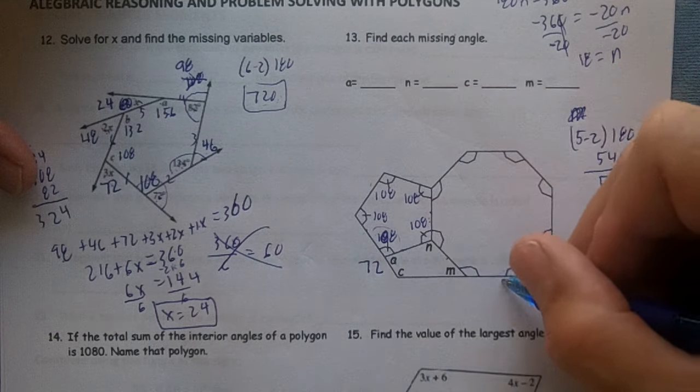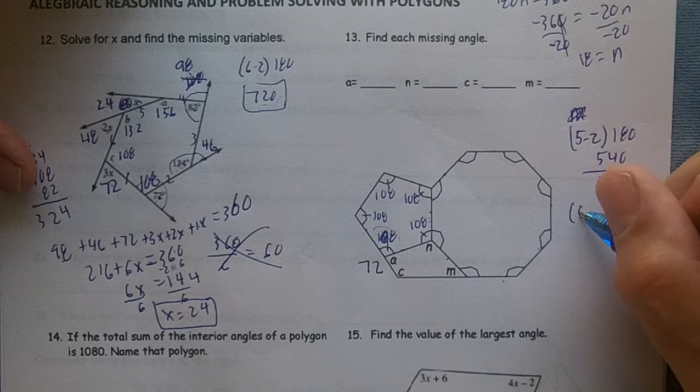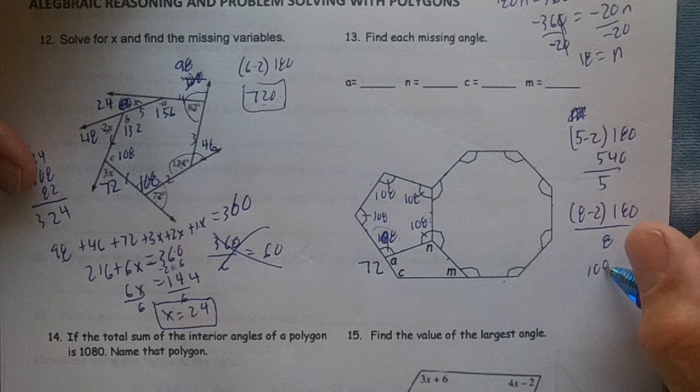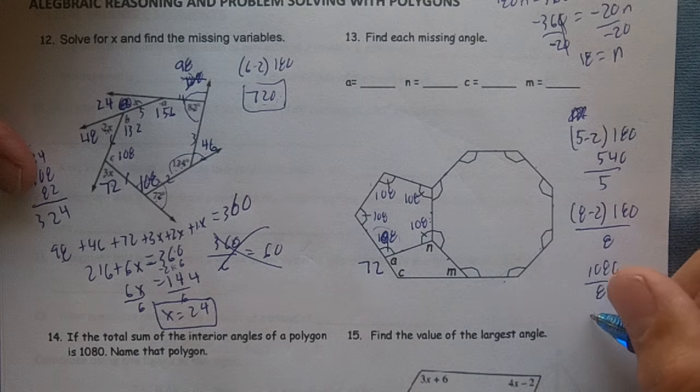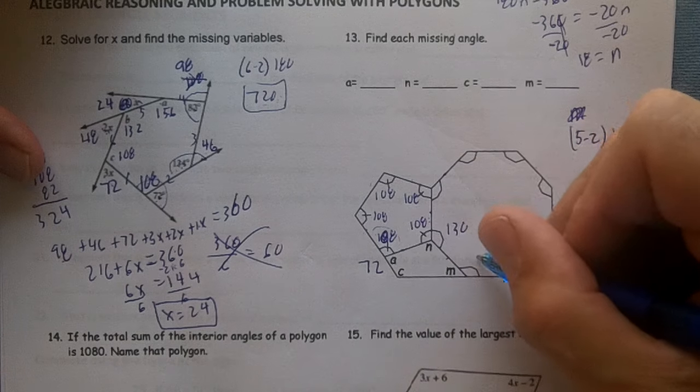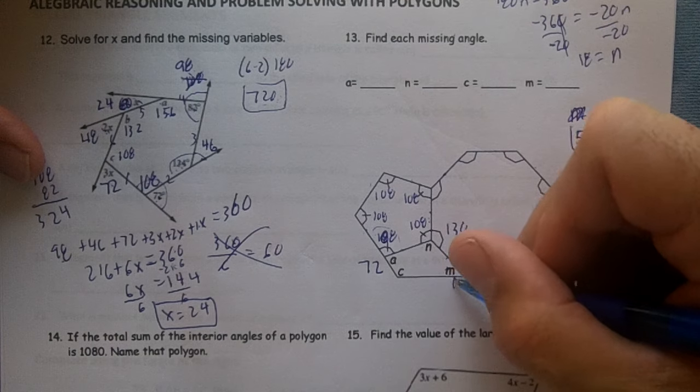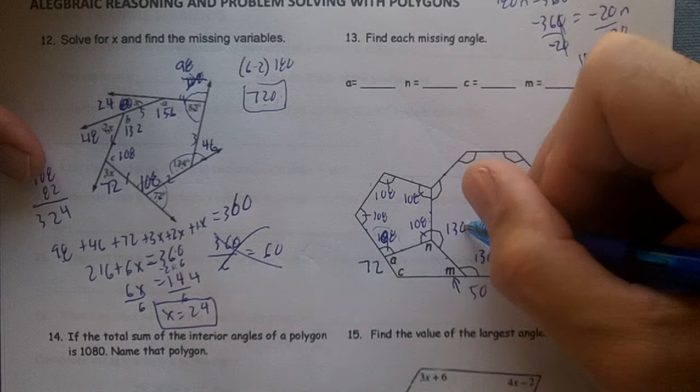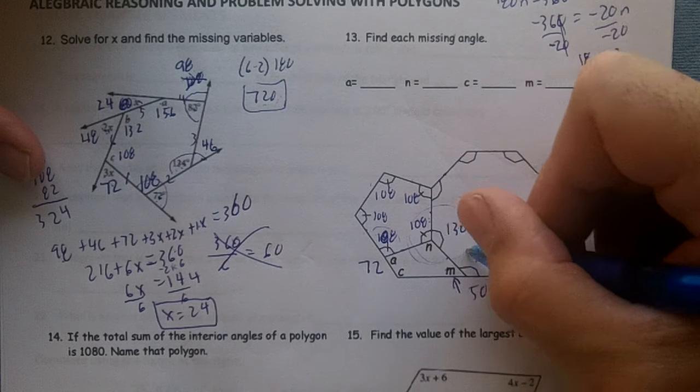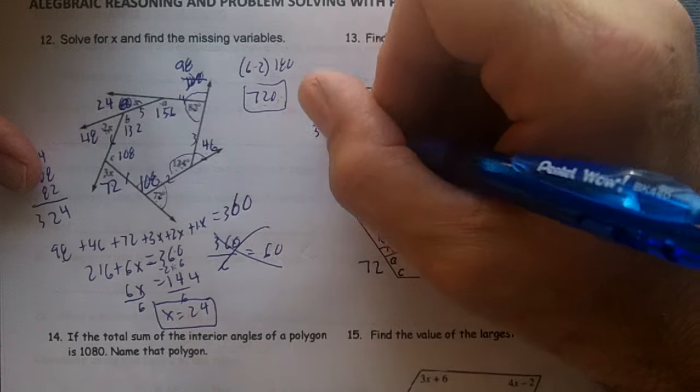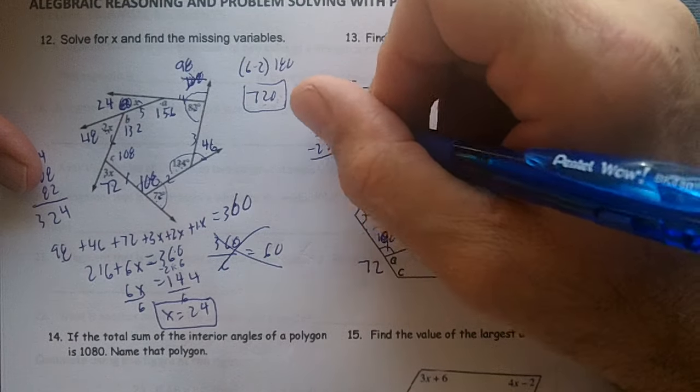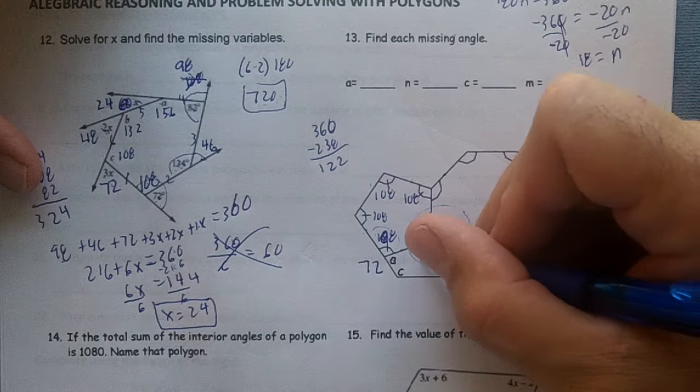This is 1, 2, 3, 4, 5, 6, 7, 8. So it's going to be 8 minus 2, times 180, divided by 8. You're going to get 6. That's going to be 1080 divided by 8, and you're going to get 130. So each of these is 130 in it. That means M is going to be 50 in it. 108 and 130 is 238. All three of these are going to add up to 360, aren't they? So 238, 360 minus 238 is 122. This is going to be 122.